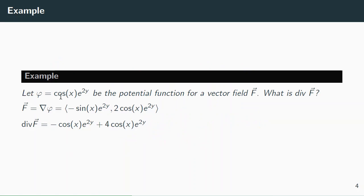Here's another example. Let φ equal a given function — that's a potential function for a vector field f. The vector field f comes from a potential function φ, so we get f by taking the gradient of φ. Taking the x derivative of cosine gives negative sine · e^(2y), and the y derivative gives 2e^(2y) times cosine. Then to find the divergence of f, we take the x derivative of the first component — which is negative cosine · e^(2y) — and the y derivative of the second component — which is 4 cosine · e^(2y) — and add them together.